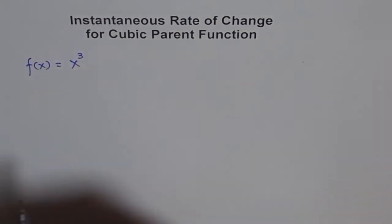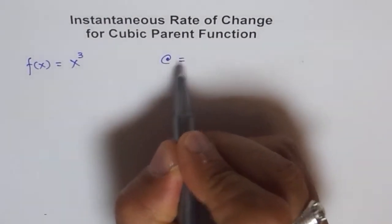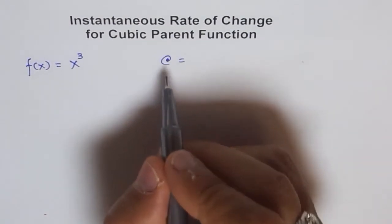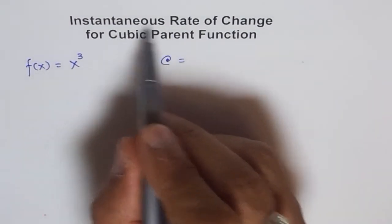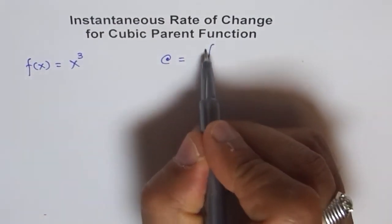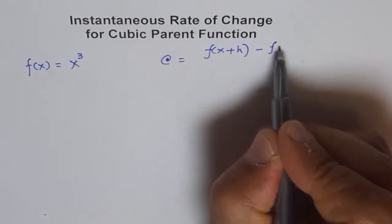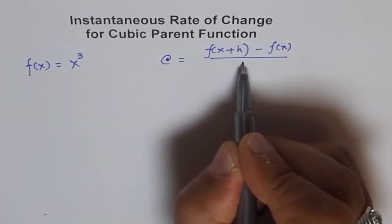The difference quotient method to find instantaneous rate of change is, I'll use this symbol for instantaneous rate of change, which is f(x+h) - f(x) over h.